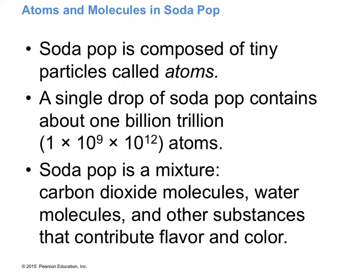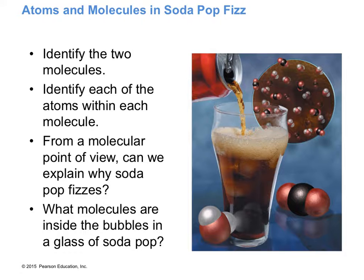An atom is essentially infinitesimally small — you can't see it with the naked eye. There are millions and millions of atoms comprising things like a pencil scratch, which is graphite — just carbon. Soda is a mixture: it contains carbon dioxide, water, sugar, and possibly dyes, flavoring, or citric acid, like in Sprite. It's called a solution — a mixture of these atoms together.